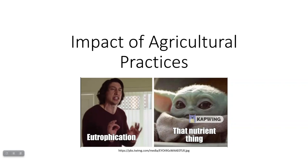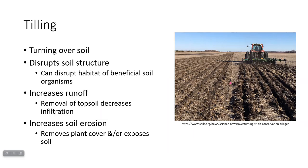In the green revolution notes, I mentioned having another lesson about the impacts of agriculture. Here is that lesson. Note that eutrophication is a term you're going to hear a lot from now on. There are multiple steps in the process of producing food that have environmental impacts.